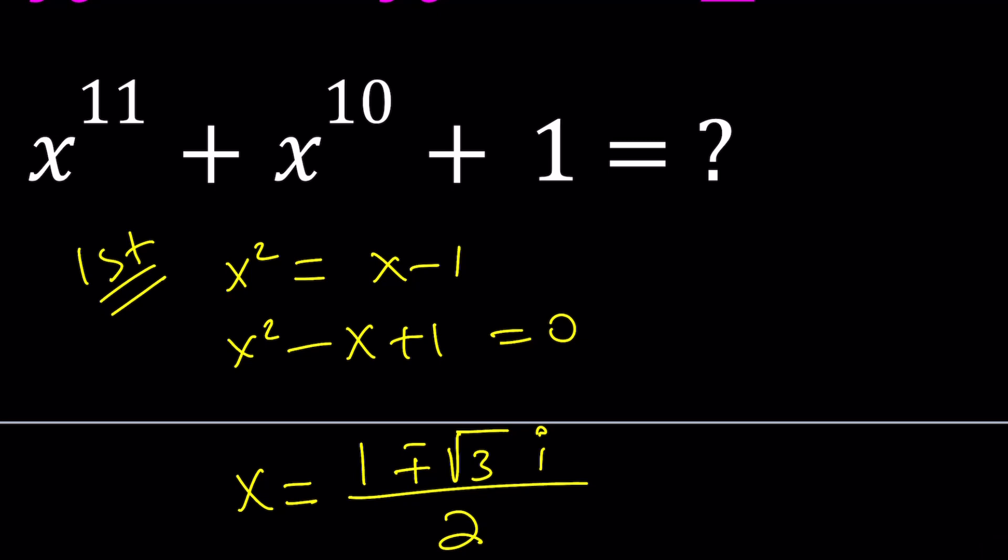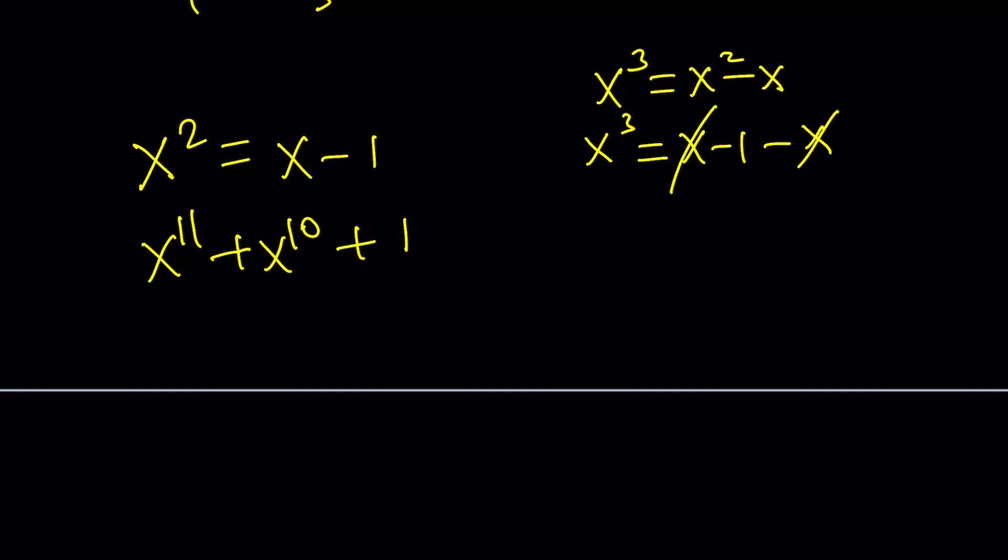Now, we have x to the 2nd power is equal to x minus 1, and we're supposed to do x to the 11th plus x to the 10th plus 1. Now, we said that x squared is x minus 1, right? So, let's go ahead and multiply both sides by x. And x cubed is going to be x squared minus x. And then x to the 3rd can be simplified by replacing x squared with x minus 1 minus x. And, yes, this is what I was trying to get. x cubed is equal to negative 1.